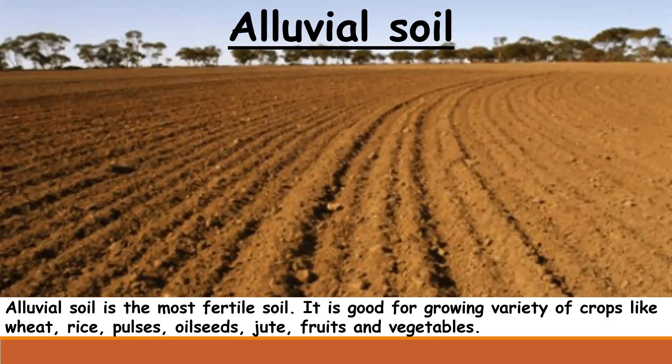Alluvial soil. Alluvial soil is the most fertile soil. It is good for growing a variety of crops like wheat, rice, pulses, oilseeds, jute, fruits, and vegetables.